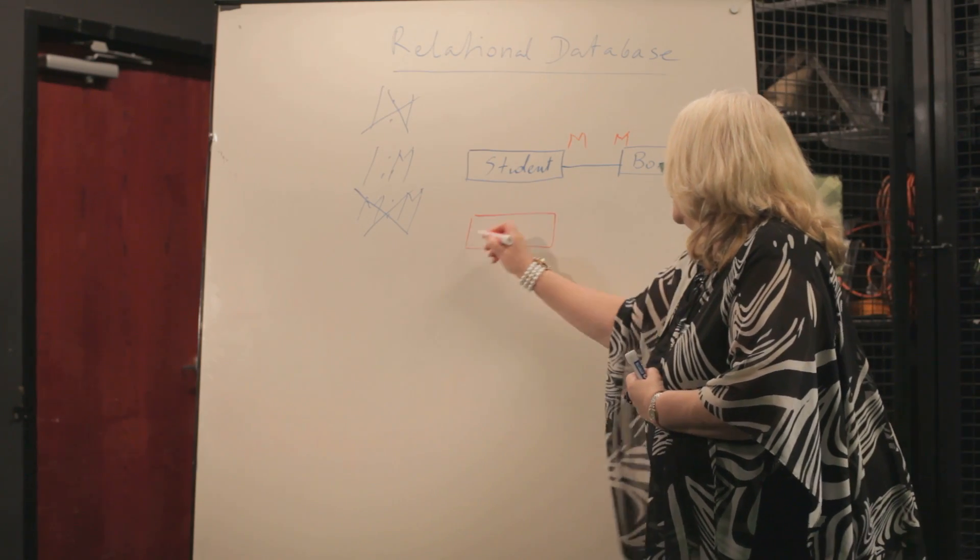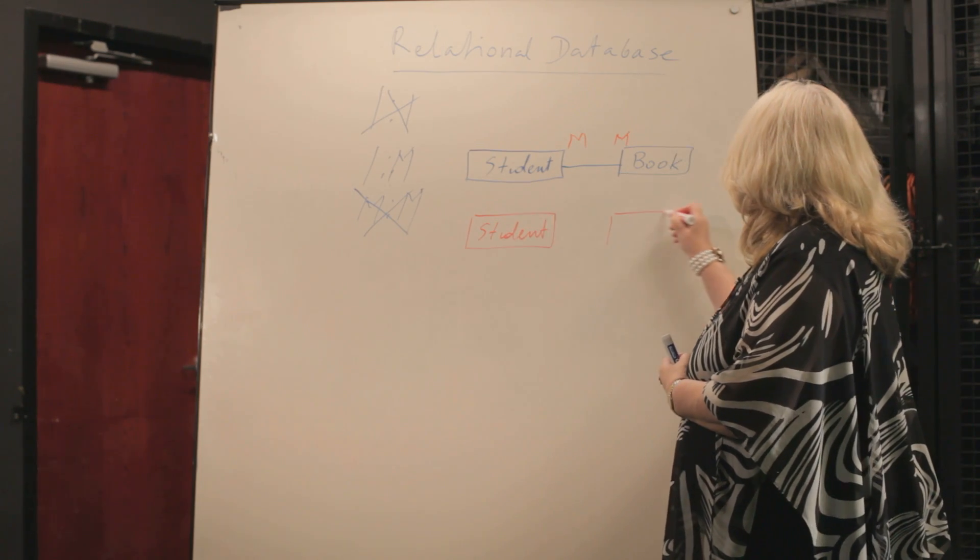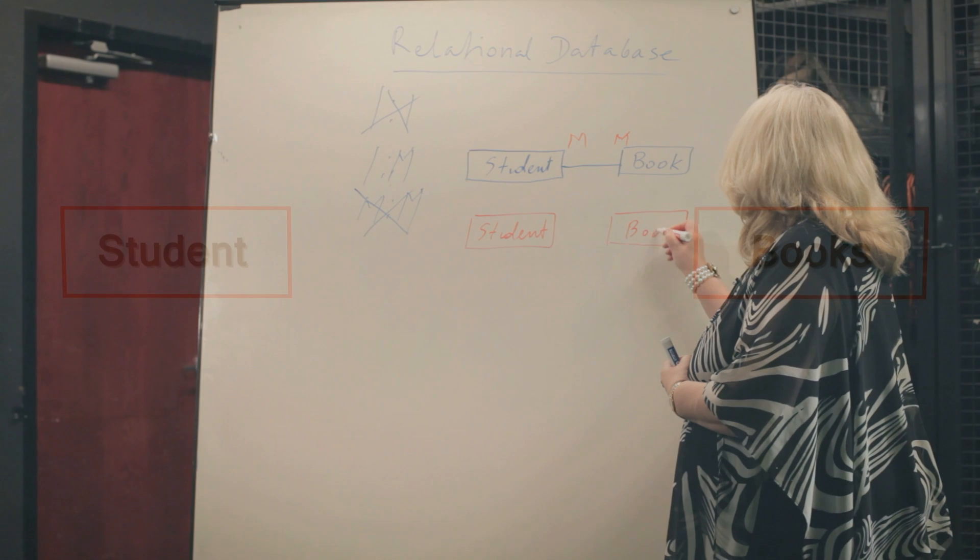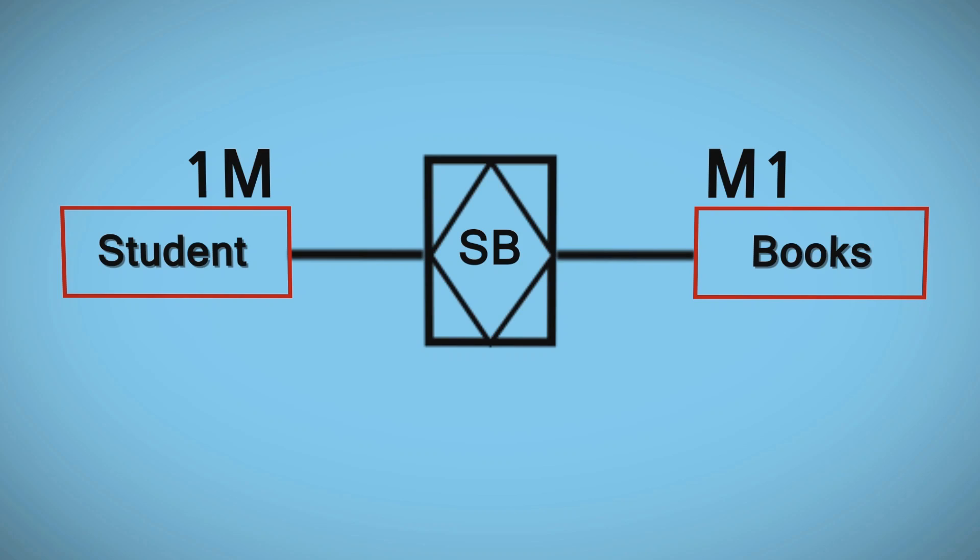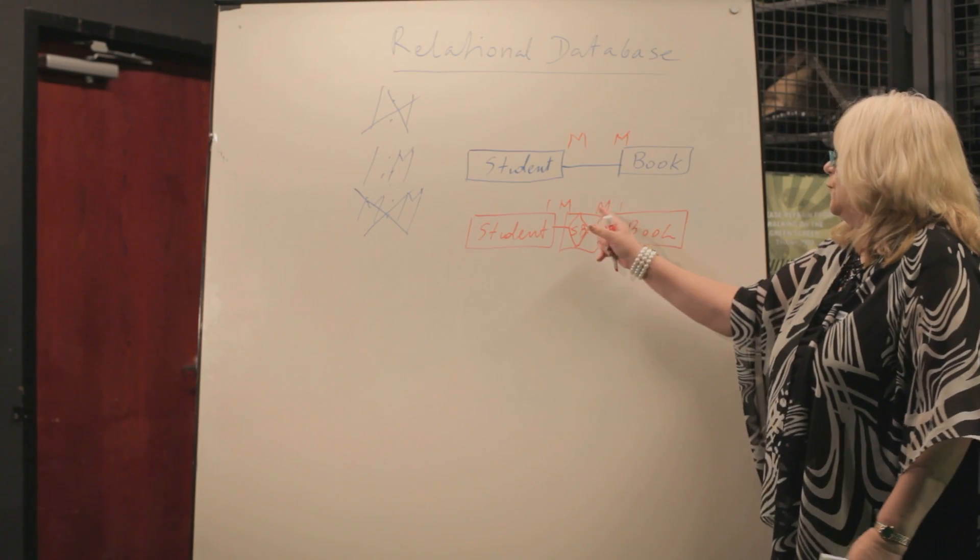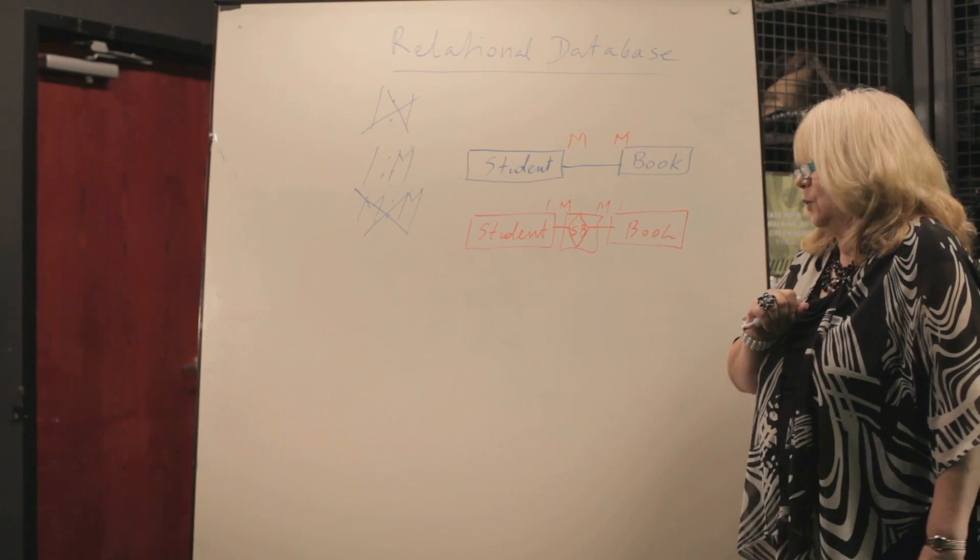That means we have to break it into two one-to-many relationships. So we again have a student table and we have book table, and between them we are going to have another entity, what we call bridge. And that bridge, it's actually a table too. The most important to know about that particular bridge that I'm going to call S-B student book, here we have many-to-one relationship. Even if our relationship going from this side, many-to-one, and one-to-many, we call them always one-to-many.